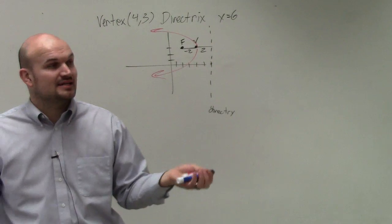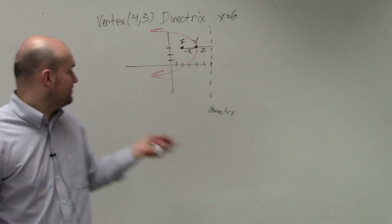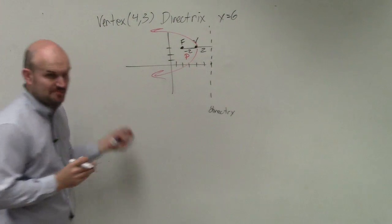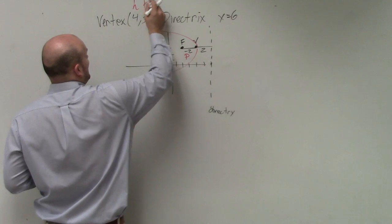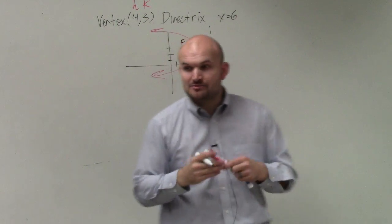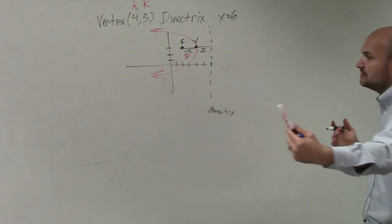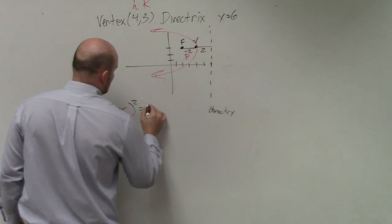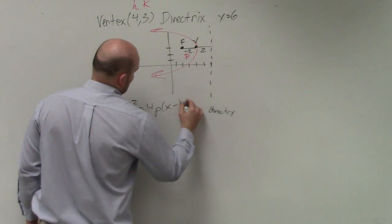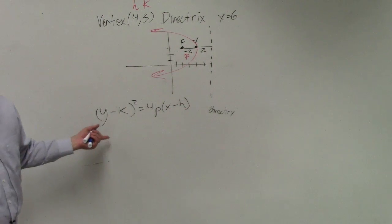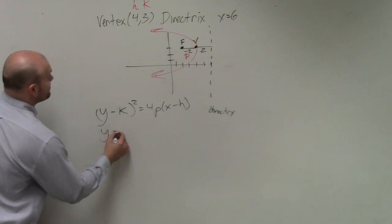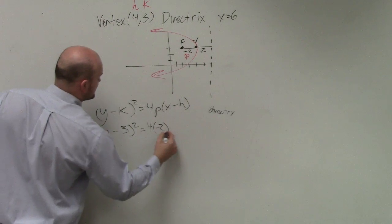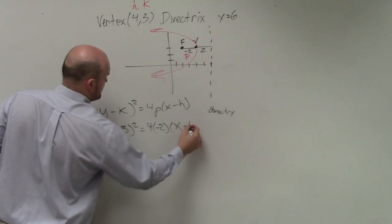Now, I'm not asking what the focus is. They're asking us to write the equation. So we know that negative 2 is p. And here's your h, and here's your k. Now, since the graph opens up to the left, we use the equation (y - k)² = 4p(x - h). And then we just plug in the information we have. So (y - 3)² = 4 times negative 2 times (x - 4).